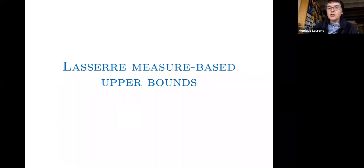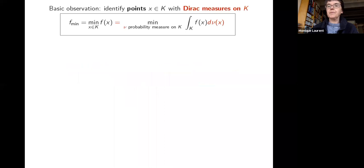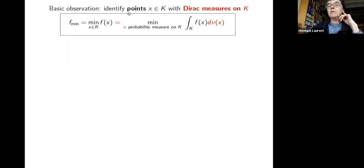Now I introduce the second hierarchy of upper bounds for the minimum of a polynomial over K. These are sometimes called measure-based bounds and are due to Lasserre. We start from the optimization formulation: find a point x in K minimizing f(x), then identify points with Dirac measures. The minimization becomes: find a probability measure on K minimizing the integral of f with respect to the unknown measure mu.